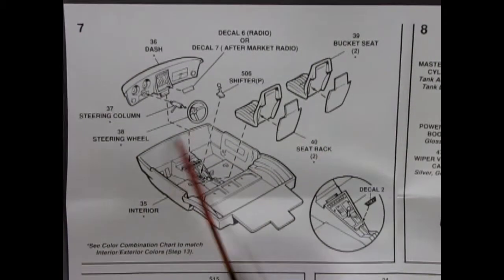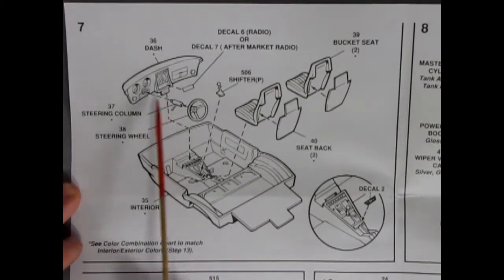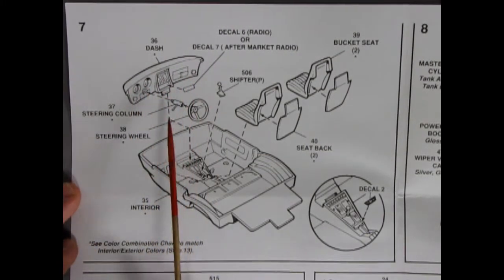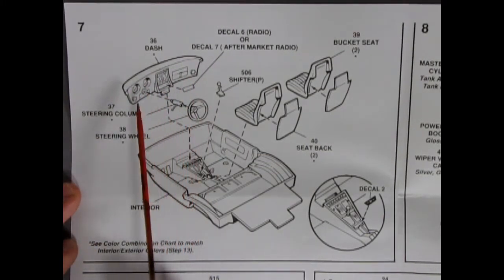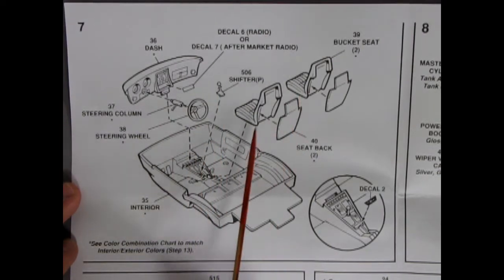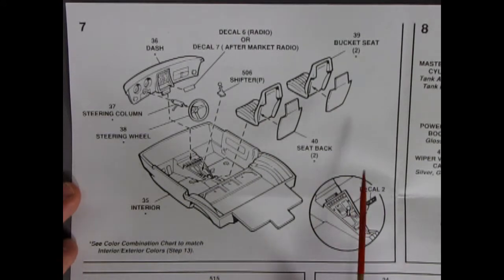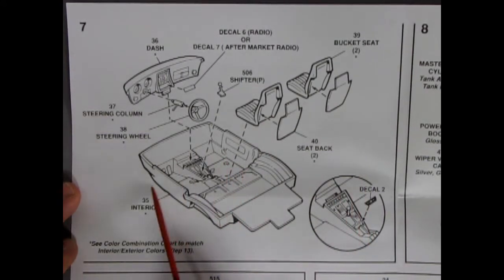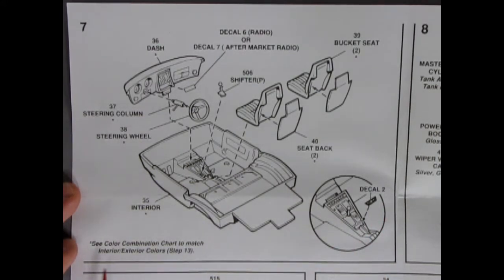In step 7 here we have our interior going together. So here we have our nice dashboard with the steering column and steering wheel all going together. Our shifter here in the floor. We've got these nice bucket seats with fronts and backs that glue down together. All into our interior tub. And then there's a decal that goes on right there for our radio. It's a C color combination chart to match interior exterior colors in step 13.